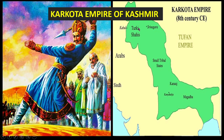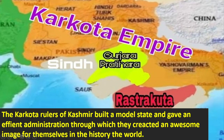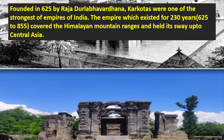The Karkota Empire of Kashmir. The Karkota rulers of Kashmir built a model state and gave an efficient administration, through which they created an awesome image for themselves in the history of the world. Founded in 650 by Raja Durullabha Vardhana, the Karkotas were one of the strongest empires of India. The empire, which existed for 230 years from 625 to 855, covered the Himalayan mountain ranges and held its sway up to central Asia.